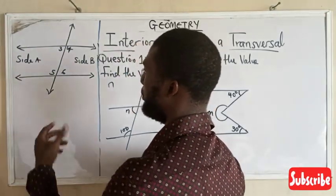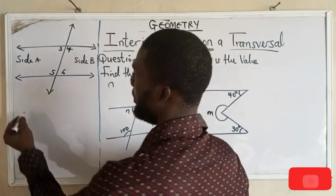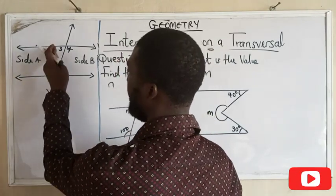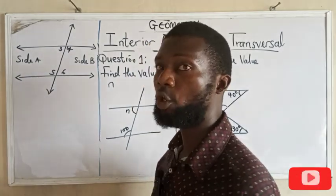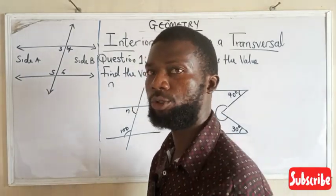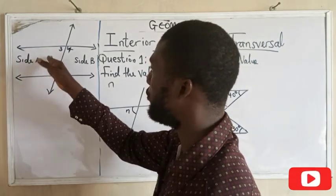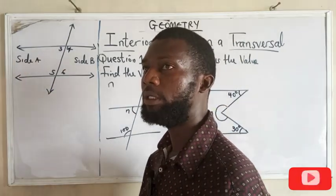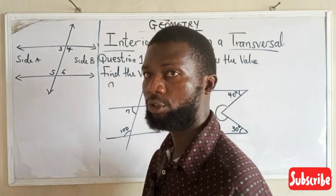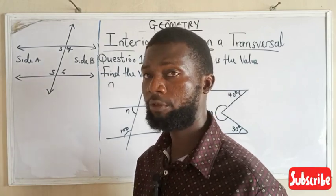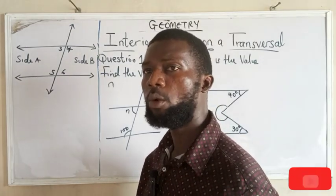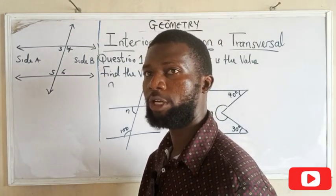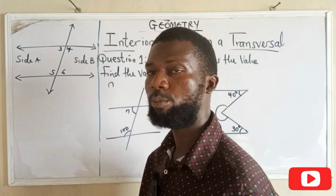The angles surrounding side A and the angles surrounding side B are what we are going to be looking at today. Now, the angles on side A are supplementary, meaning that the sum of interior angles on one side of a transversal is supplementary.